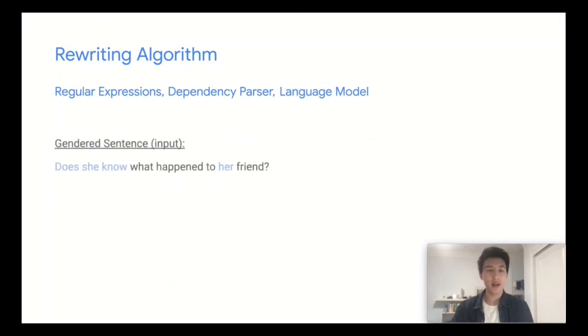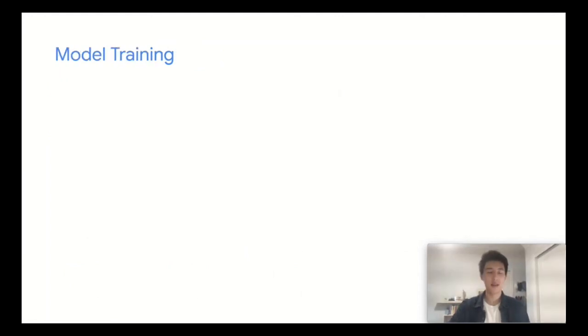Putting all these steps together, we transform the gendered sentence, does she know what happened to her friend, to the gender-neutral sentence, do they know what happened to their friend. And with this parallel dataset, we can train a sequence-to-sequence model.